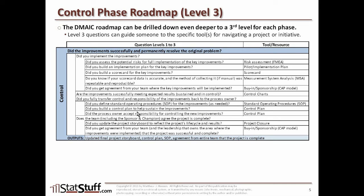Once you can answer yes to those questions, move to the last second-level question: does the team — including the sponsor and champion — agree that the project is complete? A couple of things here: did you update the project storyboard to reflect the project's lifecycle and results? This begins the project closure process, ensuring everything is fully documented — not just what you've gone through, but also the results coming out of it. Then ask: did you get agreement from your team and the leadership who owns the area where improvements are being implemented, that the project was successful and complete? It's not enough to just say it's done — you need formal closure. This is a critical area of sponsorship that sometimes gets avoided, but it's essential to work through it and get that formal closure from the leaders and the entire team involved.